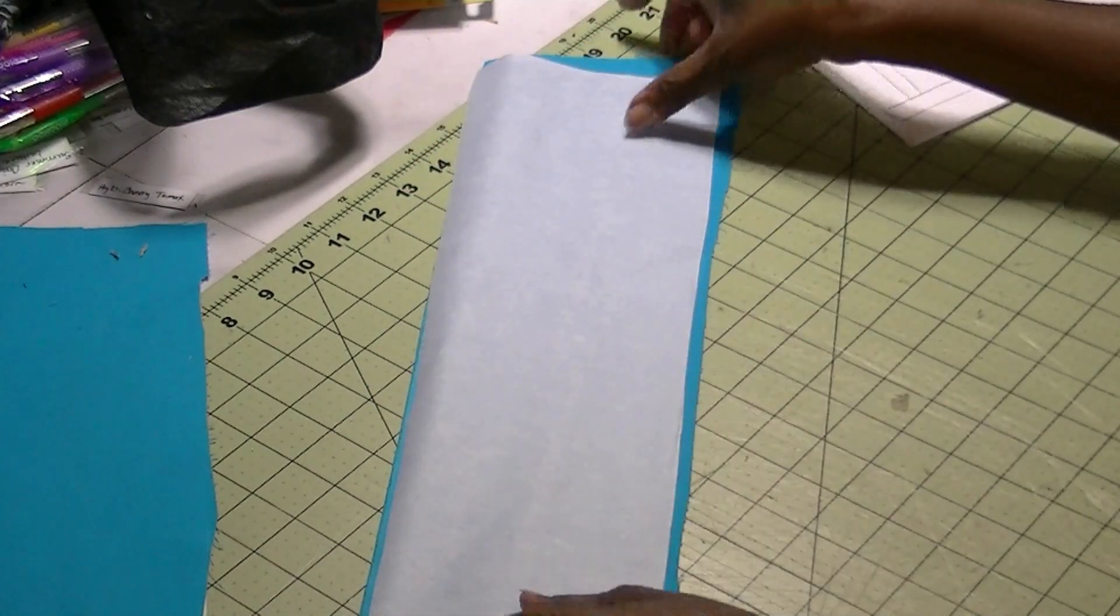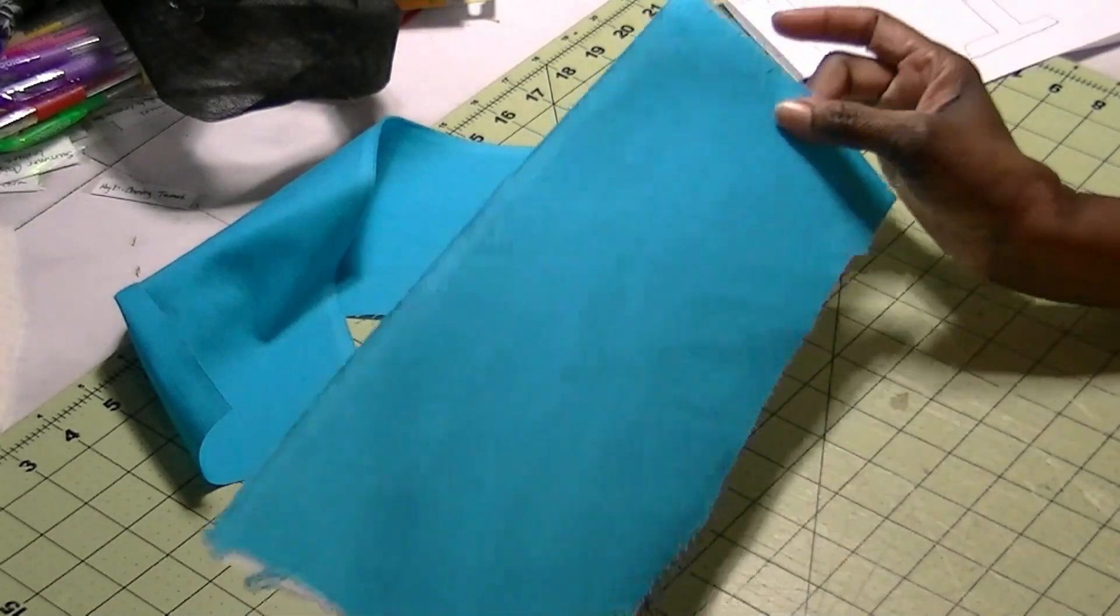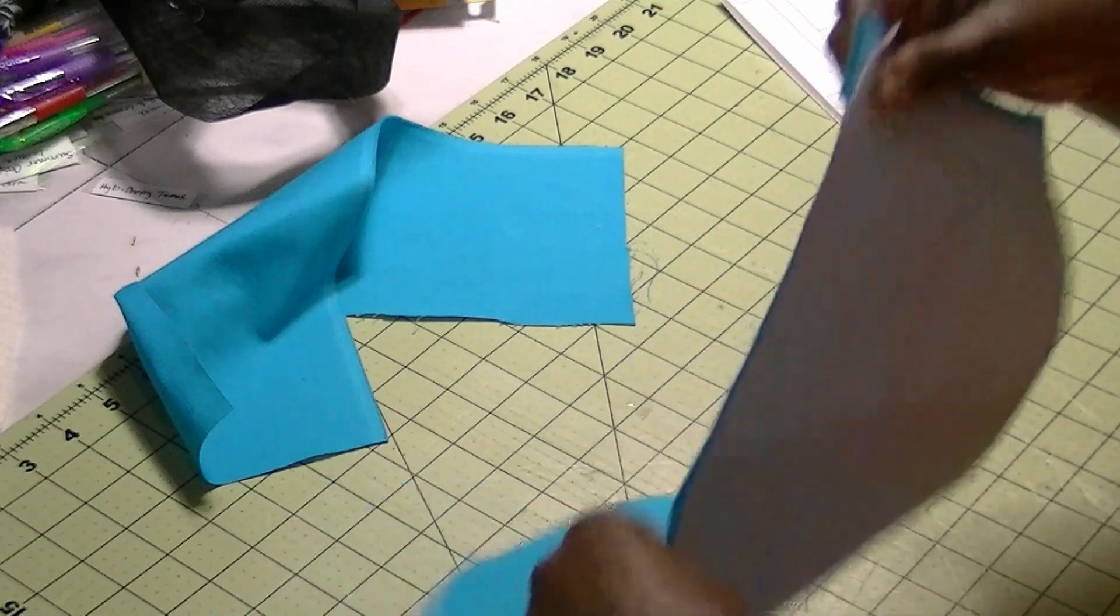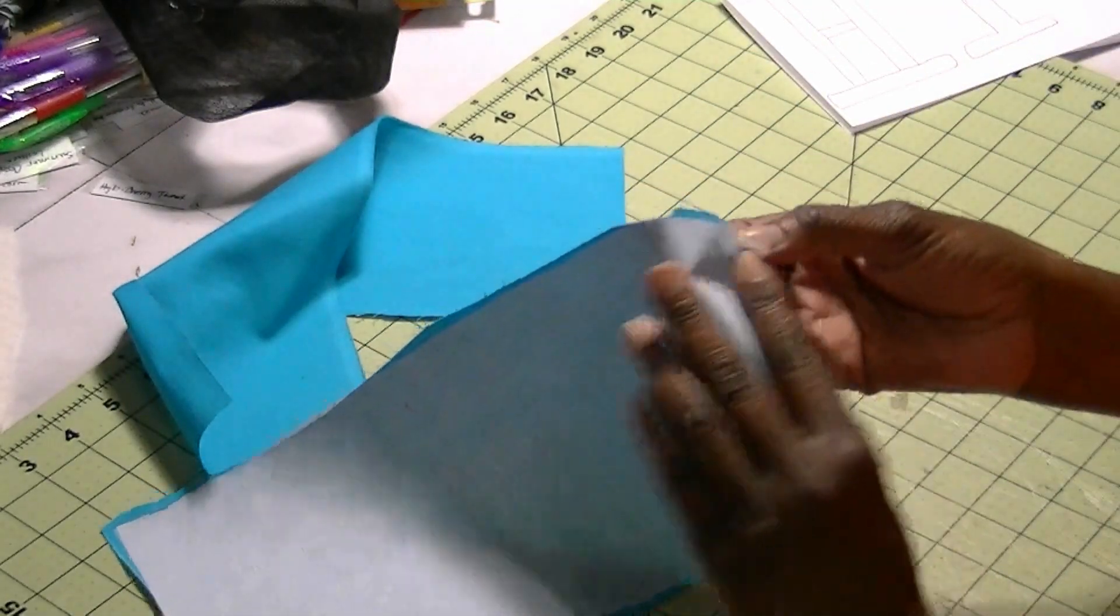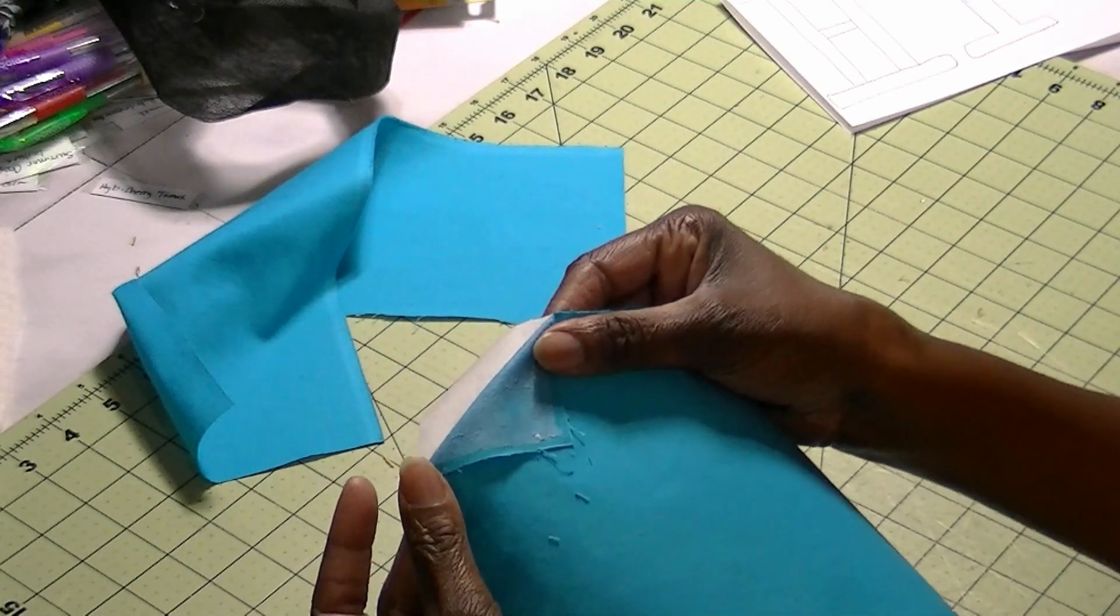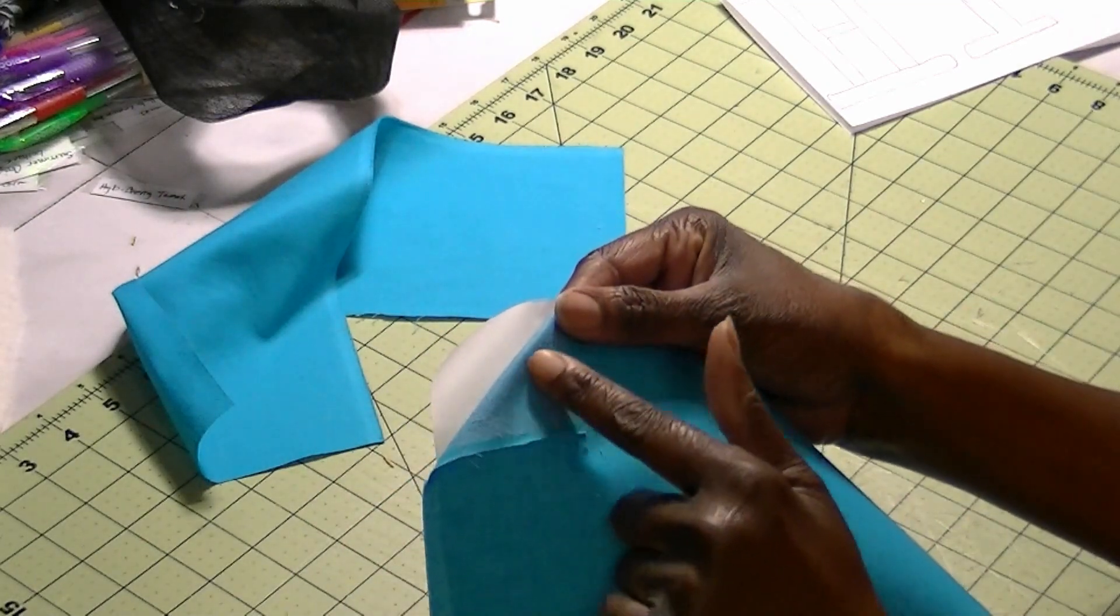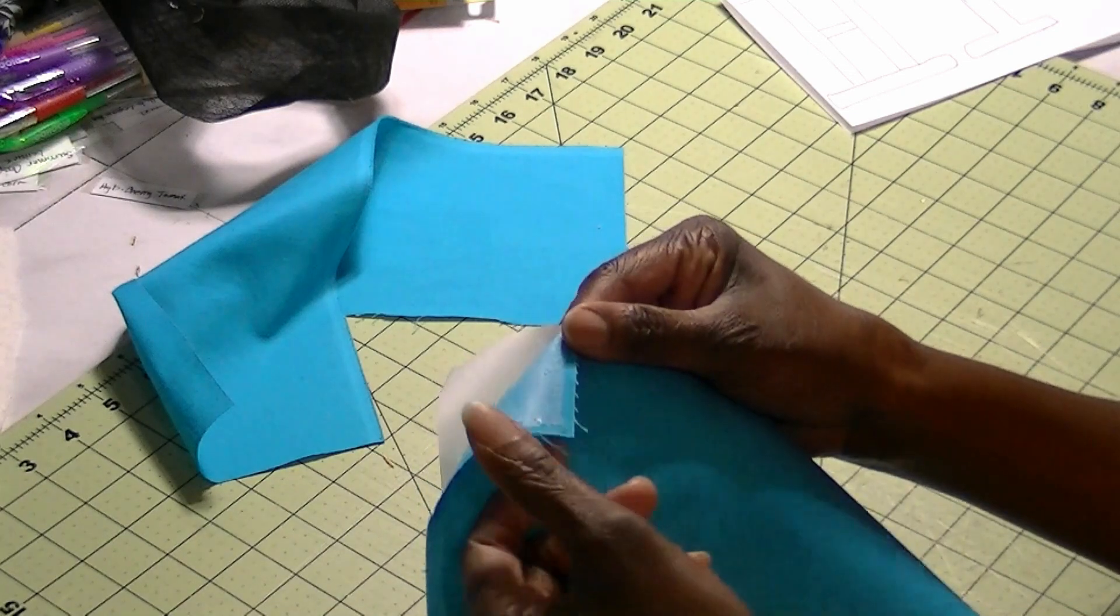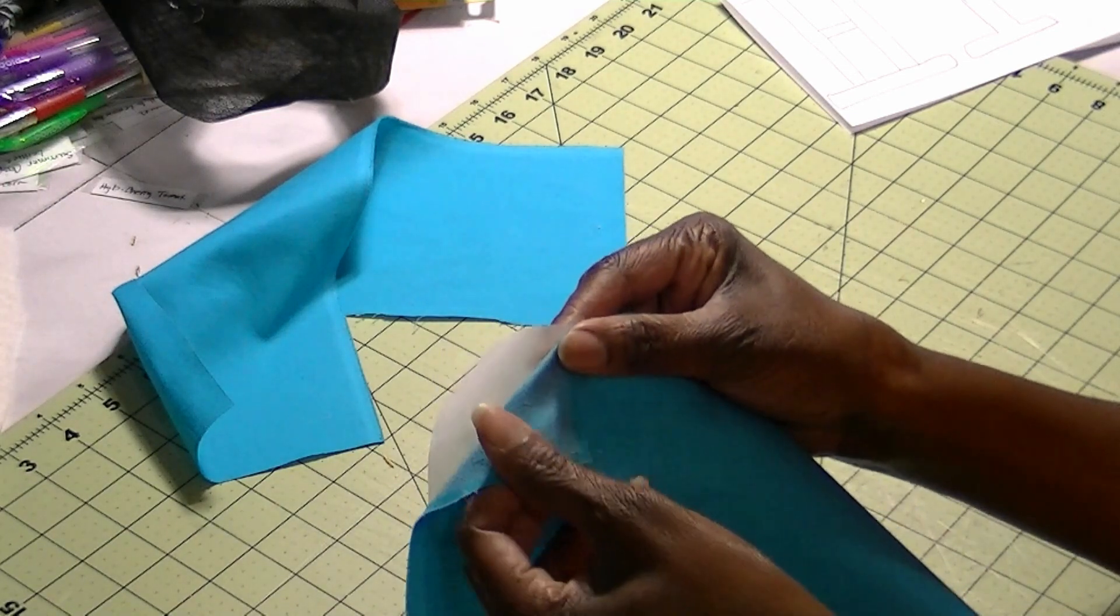So I've ironed my Pell-On down. I've ironed it down and I wanted to give you an idea of what it looks like once it's ironed down. So I peeled it back a little bit and I hope the camera is getting this. But you can see that it leaves a glue residue on the back side